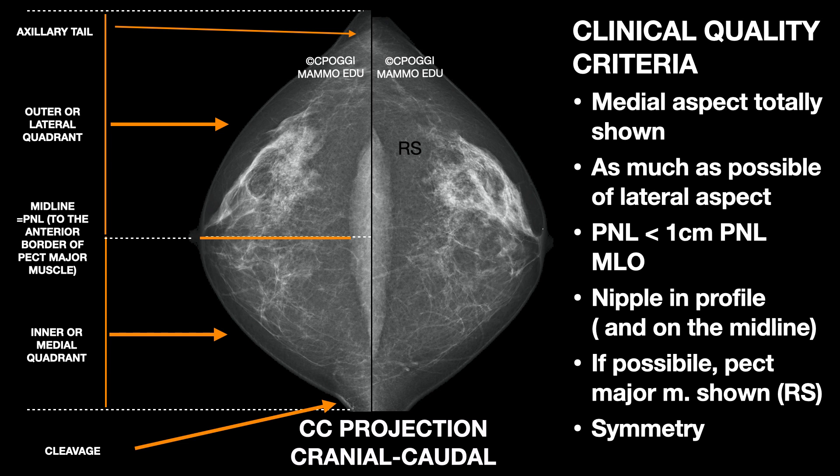Pectoralis major should be shown if possible. Actually, what really matters is not the muscle itself, but the retromammary space. We need to show it as much as possible, because of the high possibility of finding a lesion located just in front of the muscle.